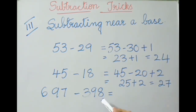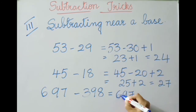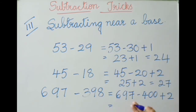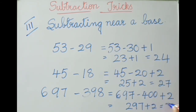Now see: six hundred ninety-seven minus three hundred ninety-eight. Three hundred ninety-eight is closer to four hundred, so it can be written as minus four hundred plus two. Six hundred ninety-seven minus four hundred plus two — six hundred ninety-seven minus four hundred is two hundred ninety-seven, then add two: two hundred ninety-seven plus two is two hundred ninety-nine. The answer is 299.